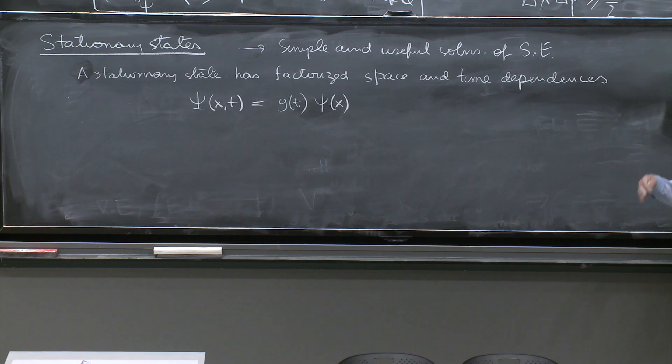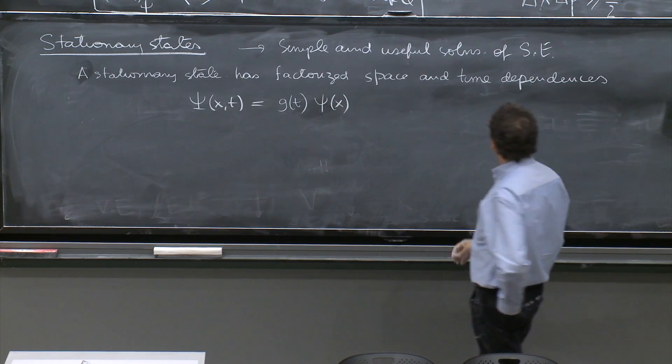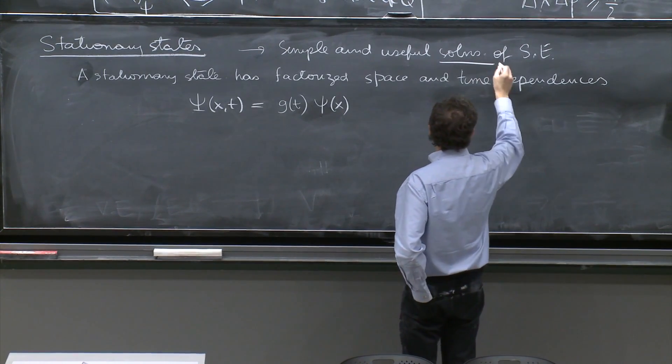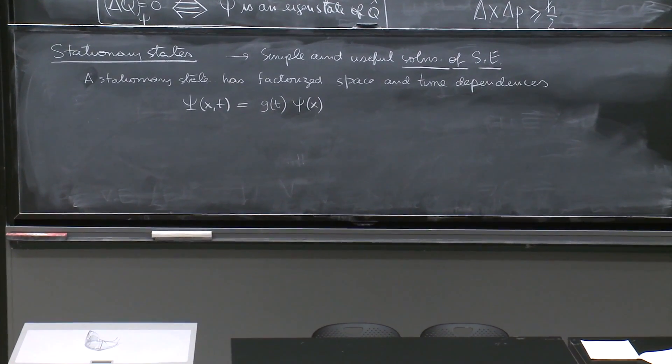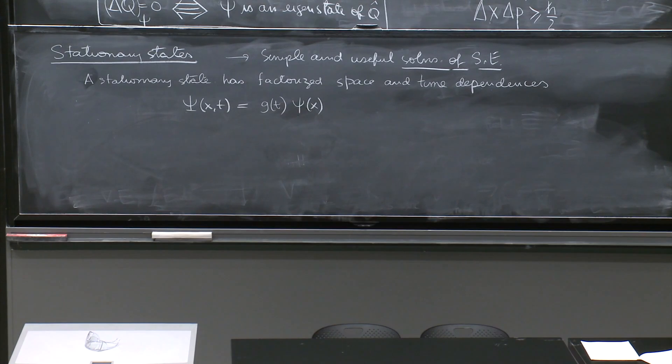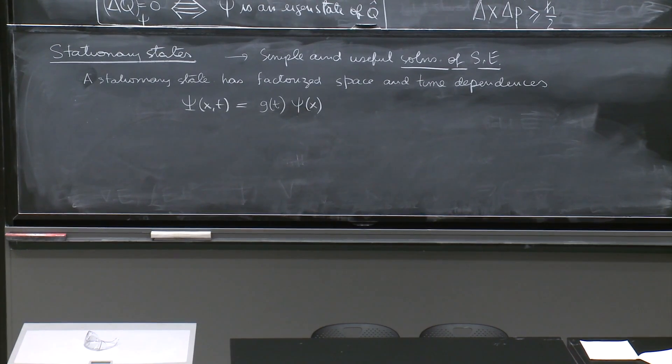So this is a stationary state. But the stationary state has factorized space and time dependence, but it solves the Schrödinger equation. So what we need to understand is what this factorized dependence tells us for the Schrödinger equation.